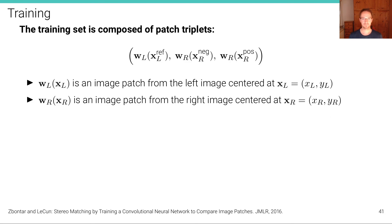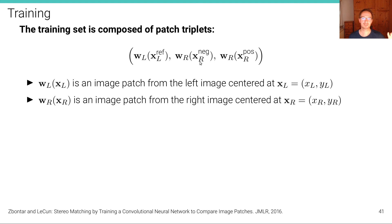How does training work in these models? The training set is composed of patch triplets using a special loss function. A patch triplet consists of: a patch from the left image (the reference for which we want the correspondence), a patch in the right image that is a negative (an incorrect patch), and a patch that is the positive example — the correct patch displaced exactly by the ground truth disparity. The bold X here refers to two-dimensional image coordinates in the left and right images.